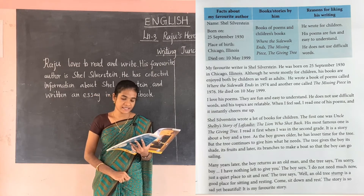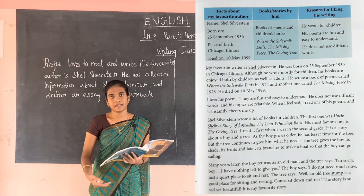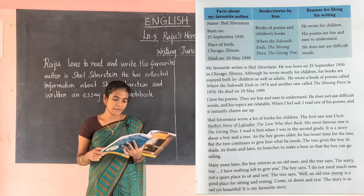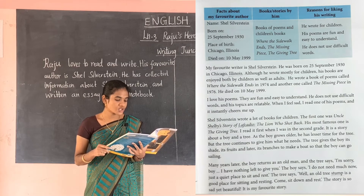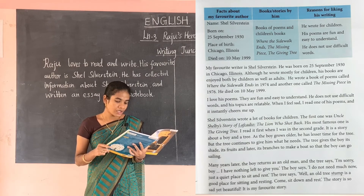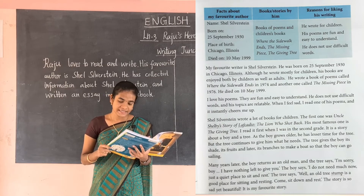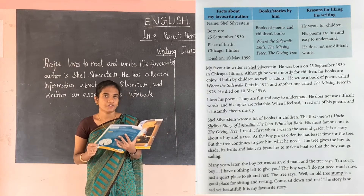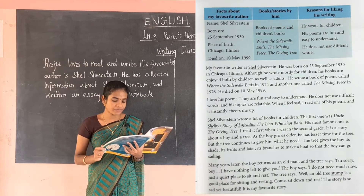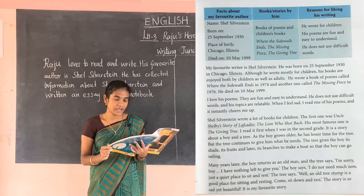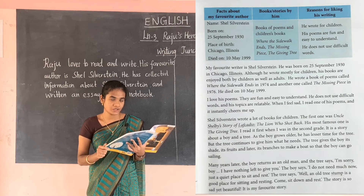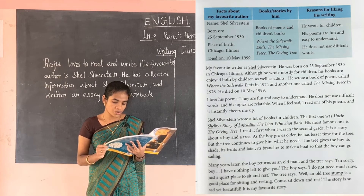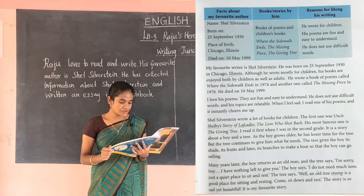The next passage is about what books and stories he has written. Shel Silverstein wrote a book of poems for children. The first one was Uncle Shel's story of Lafkadio the Lion Who Shot Back. His most famous one is The Giving Tree. I read it first when I was in second grade. It is a story about a boy and a tree.